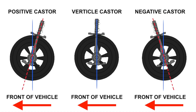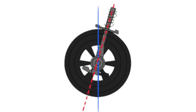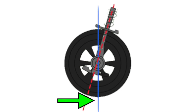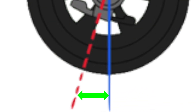Caster is the measure of how far forward or behind the steering axis is to the vertical axis, viewed from the side of the car. If you draw a line going through the front leg of your car and compare that to a line which is dead vertical, the angle created when these lines cross gives you the angle of caster. Like all alignment settings, caster is measured in degrees.